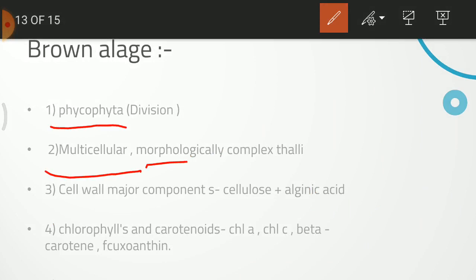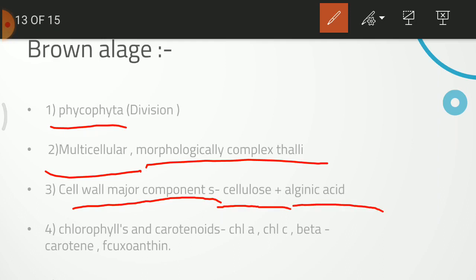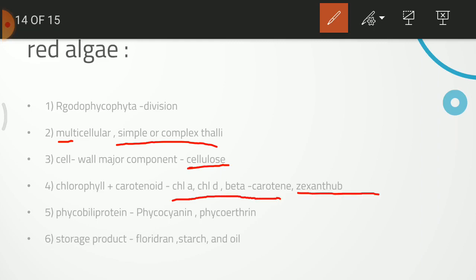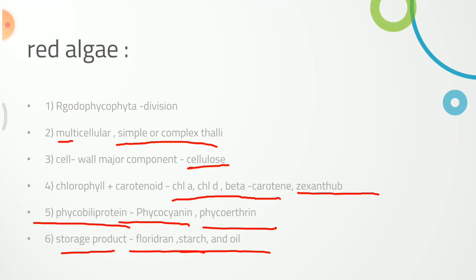Brown algae is multicellular with a complex thallus. The cell wall is made from cellulose and alginic acid. It contains chlorophyll A, chlorophyll C, beta-carotenoids, and fucoxanthin. Red algae is called Rhodophyceae — it has a simple or complex thallus. The cell wall's major component is cellulose. It contains chlorophyll A, D, beta-carotenoids, and xanthophyll, as well as phycobiliprotein — phycocyanin and phycoerythrin. Stored material includes floridean starch and oil.